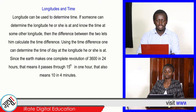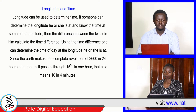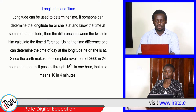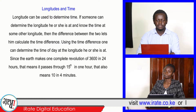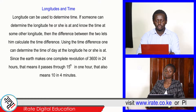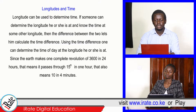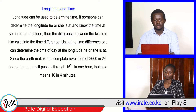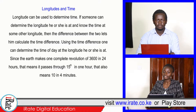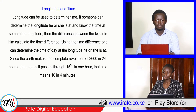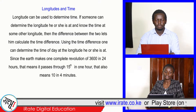Longitudes can be used to determine time. If someone can determine the longitude he or she is at and know the time at some other longitude, then the difference between the two lets him calculate the time difference. Using the time difference, one can determine the time of day at the longitude he or she is at.